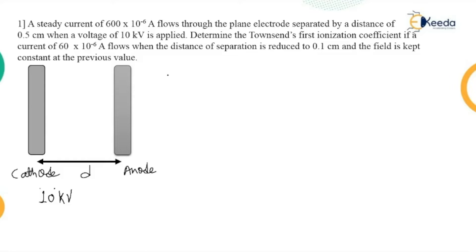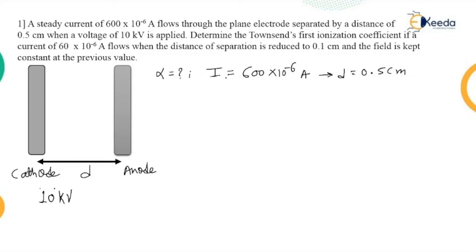We need to find Townsend's first ionization coefficient, represented as alpha. The current I1 = 600 × 10⁻⁶ Ampere for a distance D1 = 0.5 centimeter, and I2 = 60 × 10⁻⁶ Ampere for a distance of 0.1 centimeter.